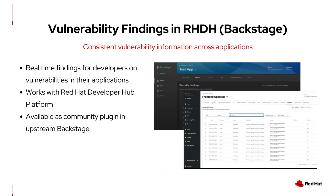ACS 4.7 ships with an integration into Red Hat Developer Hub. This brings vulnerability information directly into the developer's dashboard, and it will be consistent between the developer and the security personnel. For those new to Red Hat Developer Hub, it's a build of the open-source Backstage Project designed to create customizable internal developer portals that boost productivity specifically for developers. This integration will help catch early issues and improve communication between developers and security teams, as they'll be able to see the exact same vulnerability information across Developer Hub and ACS.